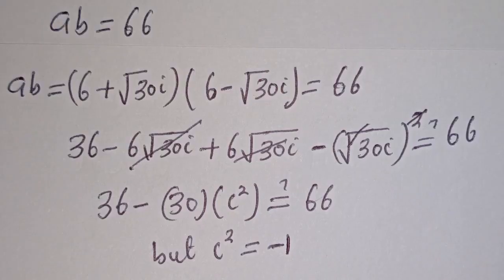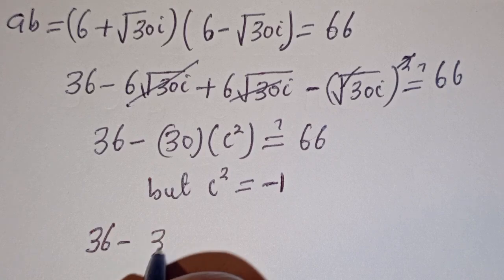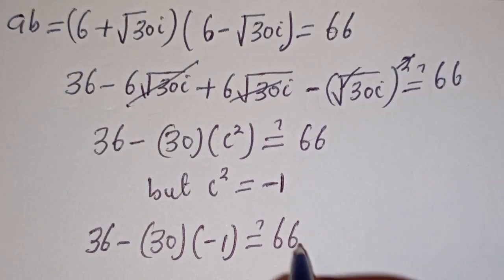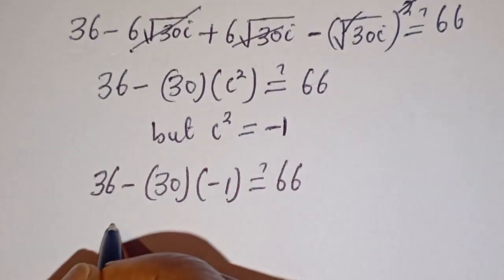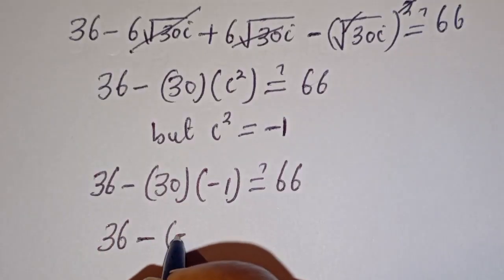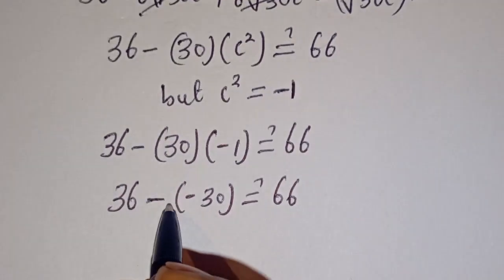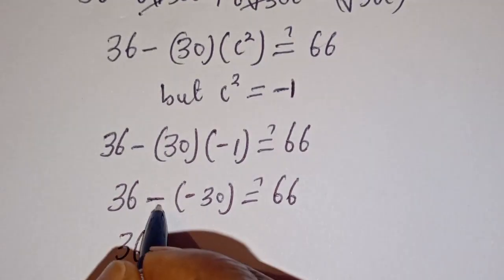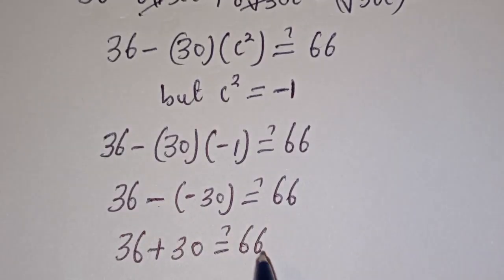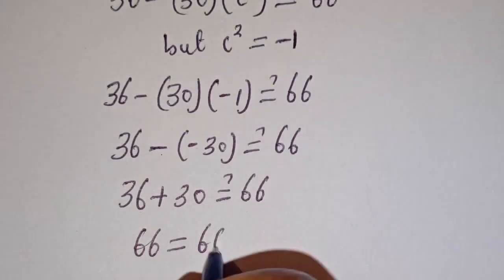We have 36 minus 30 times minus 1, since i squared equals minus 1. That is 36 minus (minus 30), which equals 36 plus 30, giving 66. This equals 66, which is true. So the answer is verified.